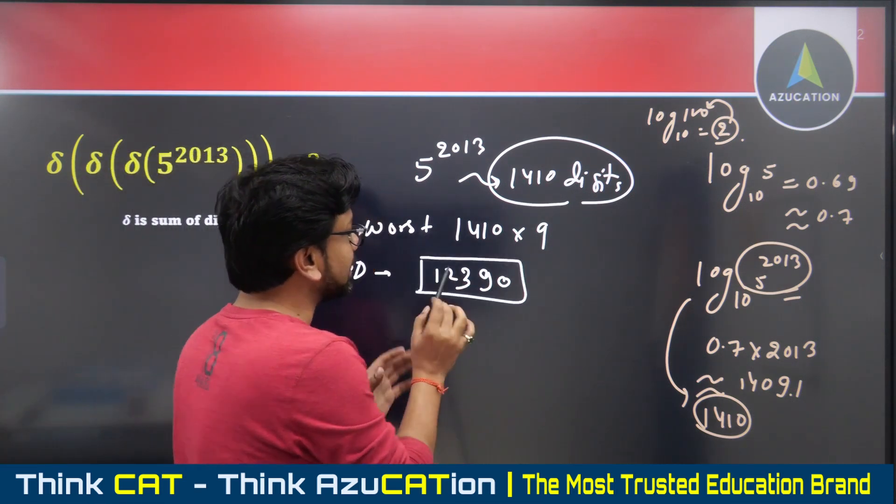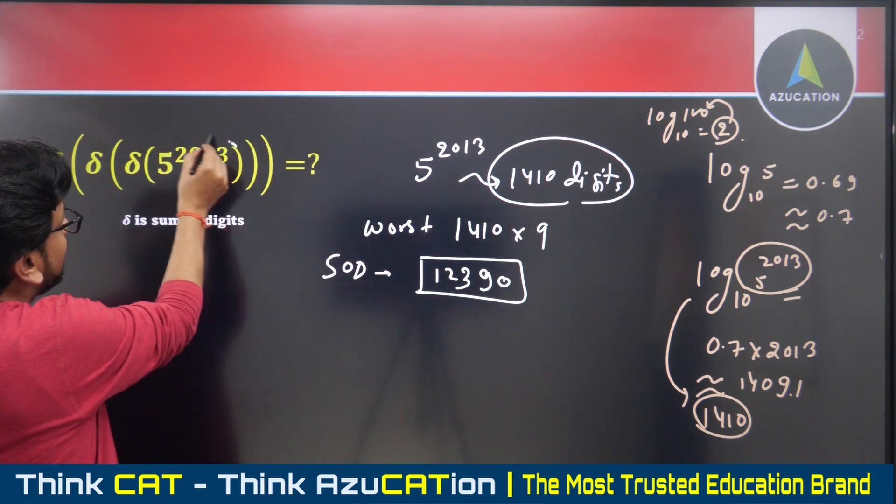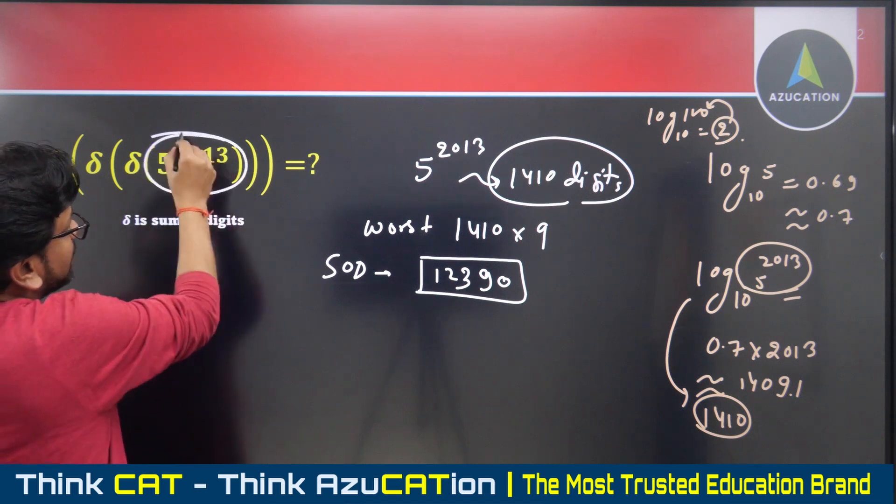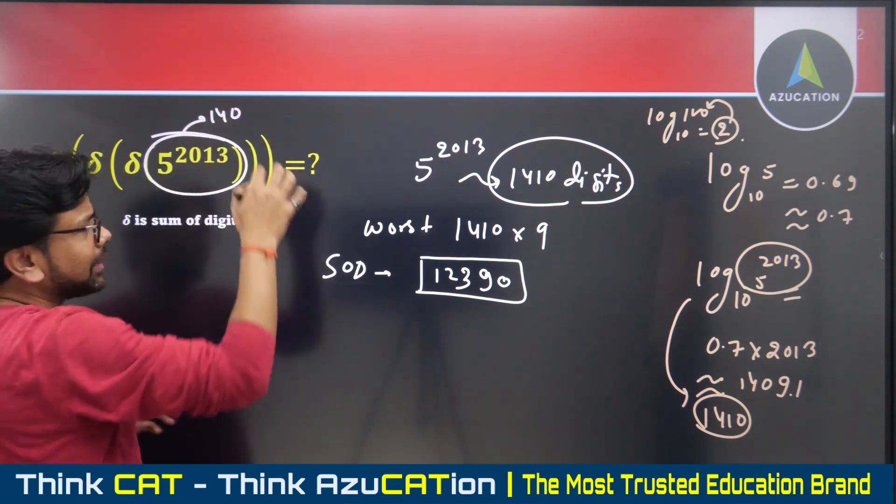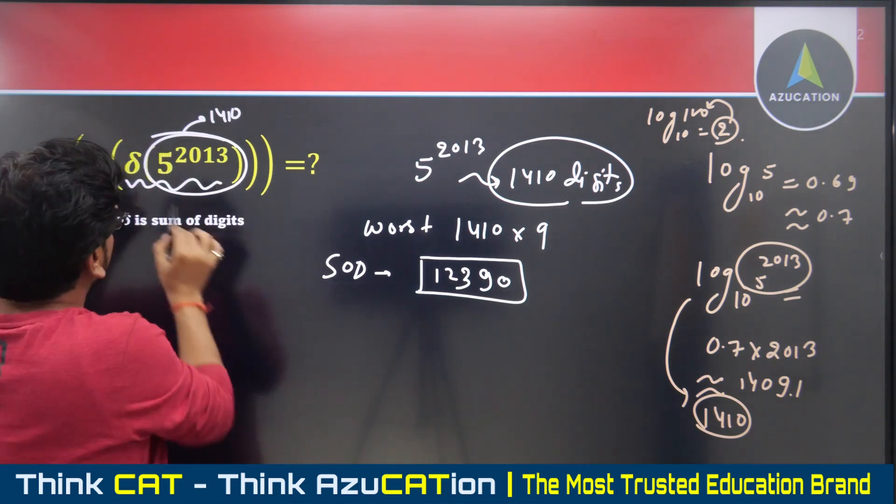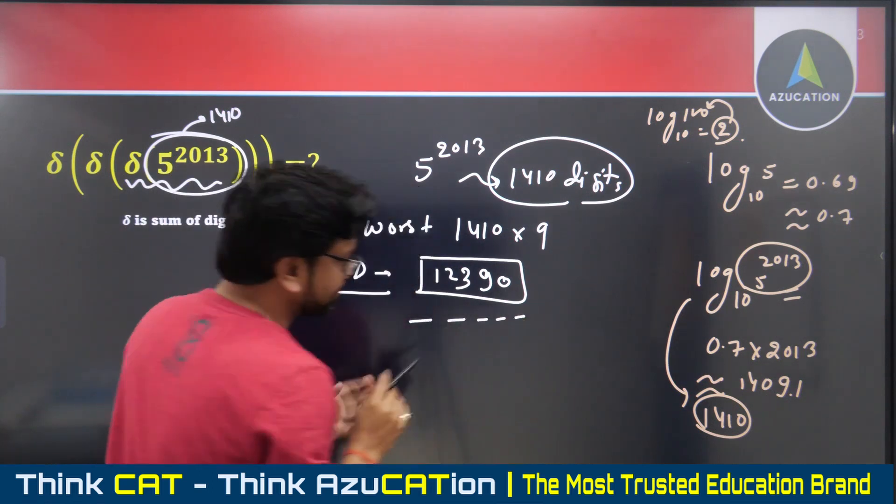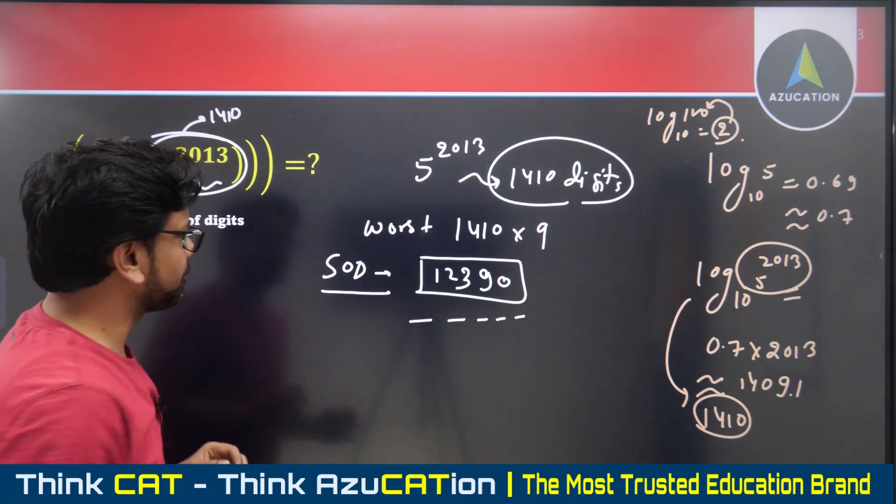In the worst scenario, this would give 1410 times 9 equals 12,690. This is a five-digit number. When I find the first summation of digits, it's a five-digit number, I know that.